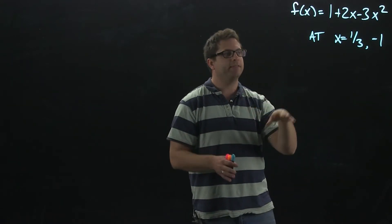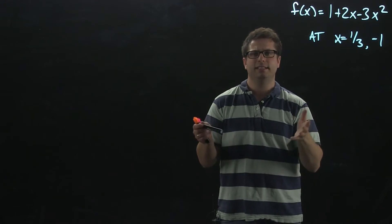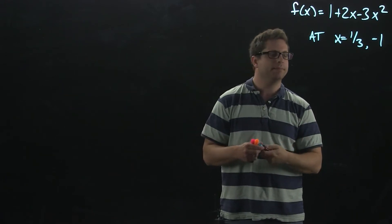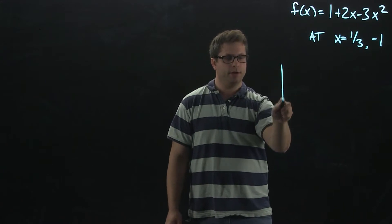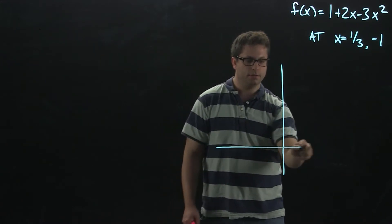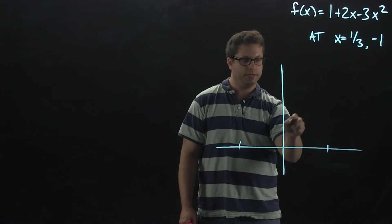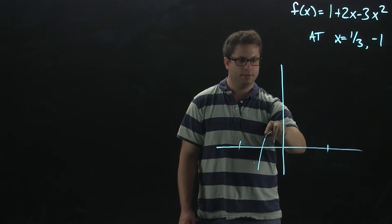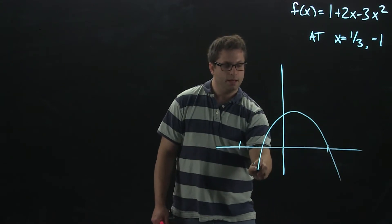I'm going to go ahead and just do a quick graph of what this is and where these tangent lines are and kind of get an idea of what the slope should be. 1 plus 2x minus 3x squared. Really quick picture here, but it's going to look something like this. It is a parabola.